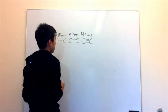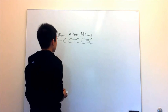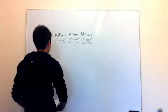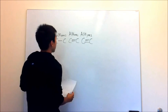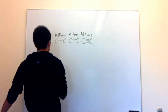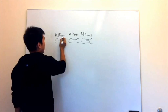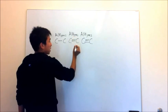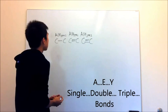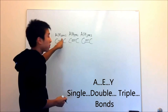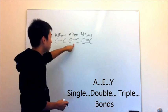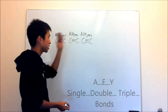On the exam, if they want you to differentiate between alkane, alkene, and alkynes, a trick I thought of is to look at the A in alkane, the E in alkenes, and the Y in alkynes. A comes first in the alphabet, so that must be the single bond. E comes next, so double bond. Y comes last, so it must be the triple bond.